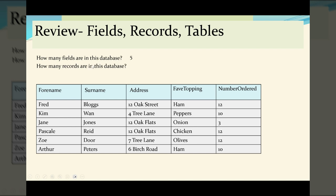Next question, how many records? So how many complete sets of information? So we've got this one, two, three, four, five, and six complete sets of information. So we have six records in this database.